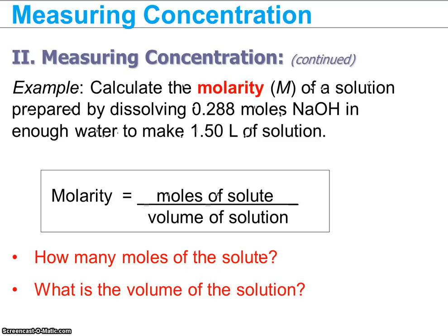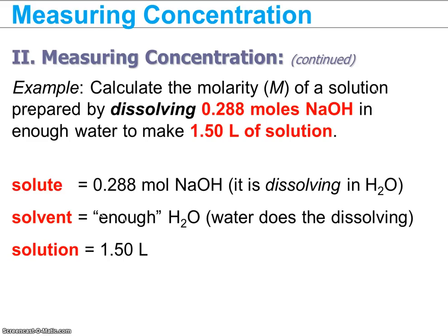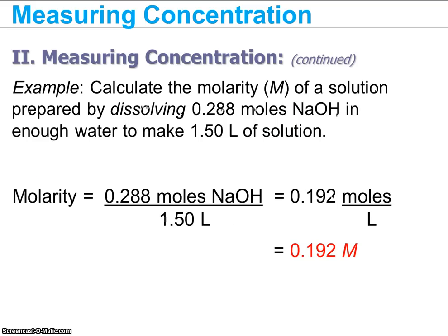In this example, we want to know the molarity of a solution made by dissolving 0.288 moles of sodium hydroxide in enough water to make 1.5 liters of solution. We identify NaOH as the solute because it is what is dissolving in water. The solvent is water, and we don't need to know the exact amount of water because the problem tells us the total solution volume is 1.5 liters. Plugging into our equation, molarity equals 0.288 moles NaOH divided by 1.5 liters, which gives us 0.192 M, or 0.192 molar.